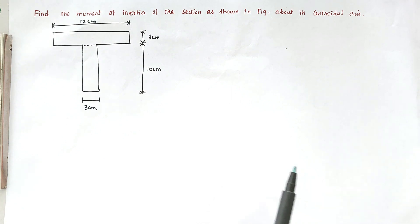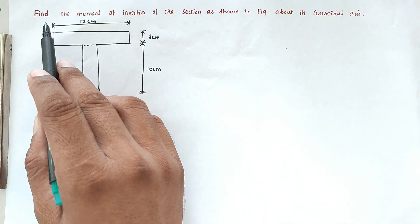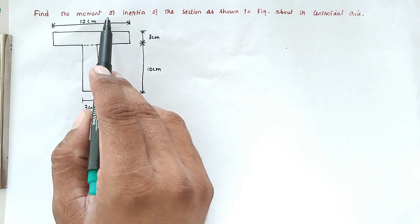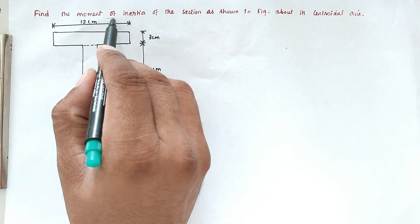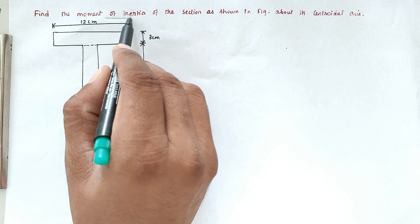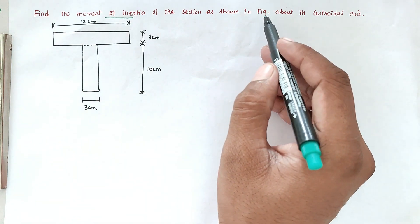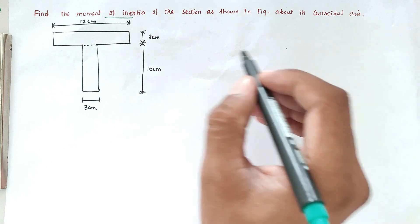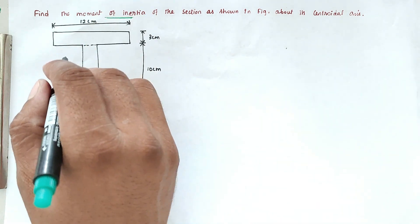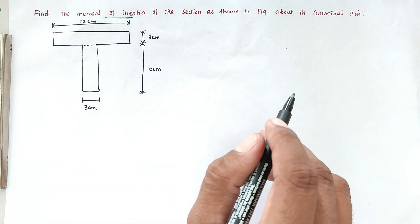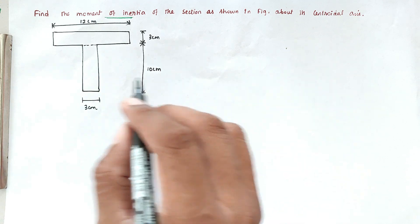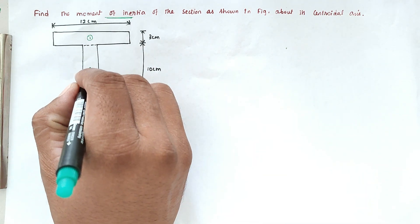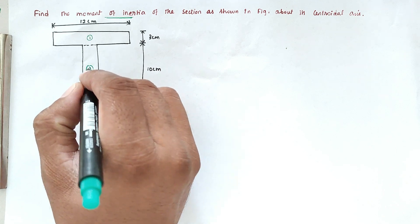Hello friends, welcome to our channel. Today we are going to see a problem related to engineering mechanics. The problem is to find the moment of inertia of the section shown in the figure about its central axis. This is a T-beam, with section one and section two.